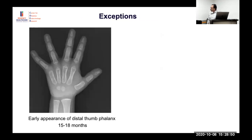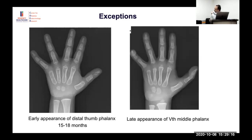There are exceptions to remember: the distal thumb epiphysis tends to appear a bit earlier, around fifteen to eighteen months. You will see a small ossification around the thumb in many X-rays — this is normal, not a discrepancy. Also, the fifth middle phalanx may take a long time to appear. So thumb and fifth finger can be exceptions to the general proximal-to-distal sequence rule.